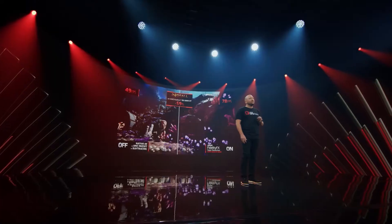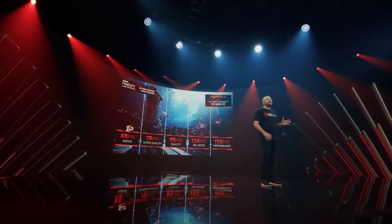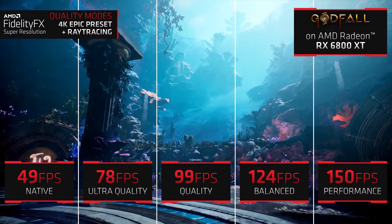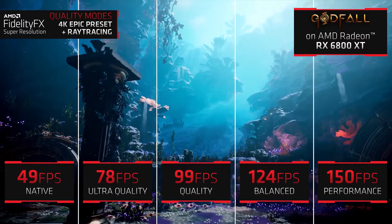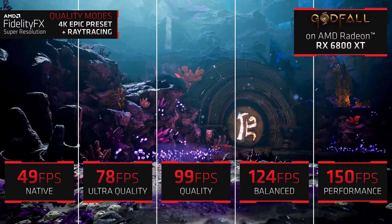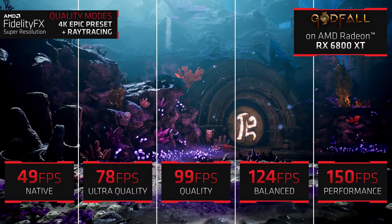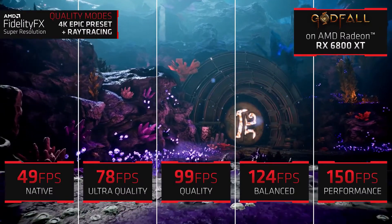Some of us care more about performance, and some of us care more about image quality. That's exactly why we've created four different quality settings in FSR. Gamers can expect anywhere from a 59% increase between native and ultra quality mode to over 2x increase when switching to performance mode.